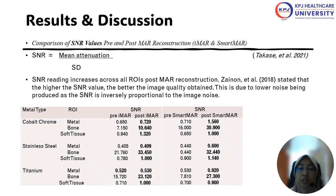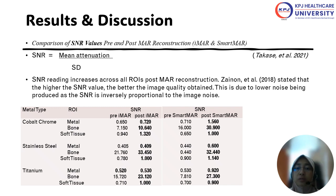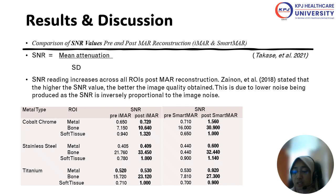For the SNR (signal-to-noise ratio) values comparing pre and post-MAR reconstructions, we used the Takasi et al. 2021 calculation method. For overall images, post-MAR reconstruction shows an increase in SNR. As stated by Zynone et al. 2018, the higher the SNR value, the better the image quality that can be obtained. This is due to the lower noise being produced, as SNR is inversely proportional to image noise. The tables clearly show that after using MAR reconstruction, there is an increase in the SNR values.